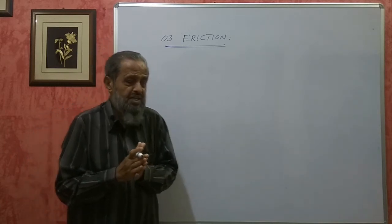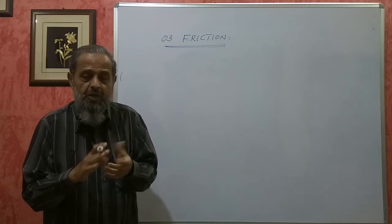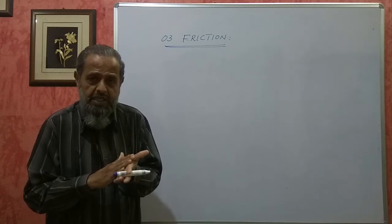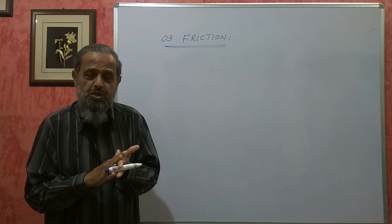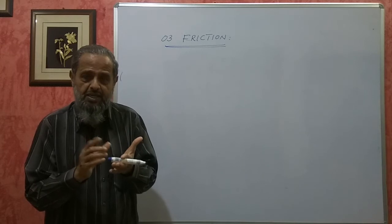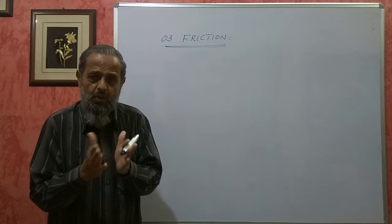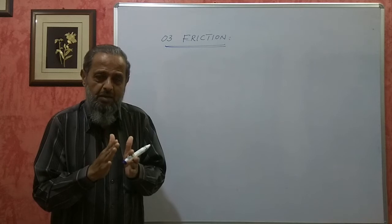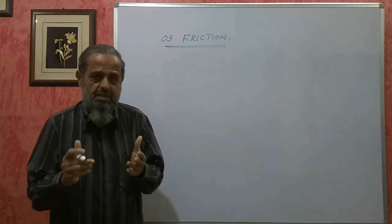Why does this friction take place? Whenever two bodies are in contact and have to have relative motion, we try to finish them as smoothly as possible. But even then, if you study it under a powerful microscope, you will find there are many ups and downs. These ups and downs in both surfaces get interlocked, and as a result, friction occurs.